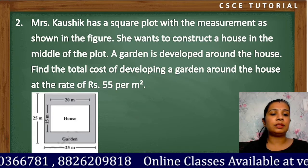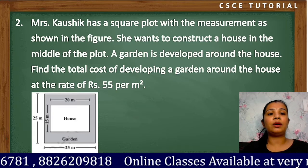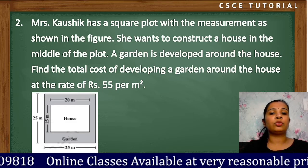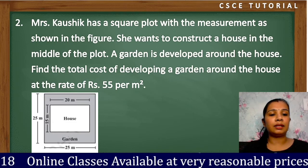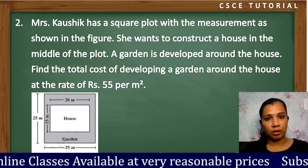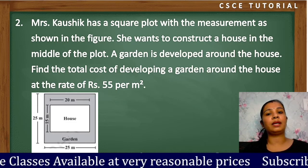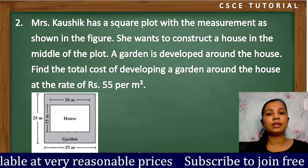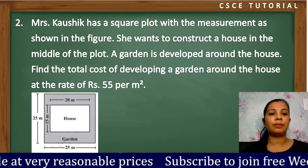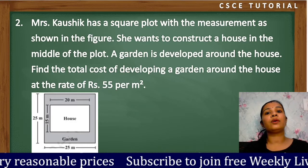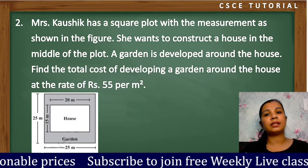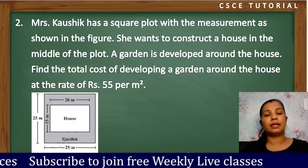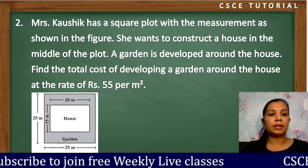You have to use the dimensions of the house as shown. The area of the house is in the middle of the plot. We will start with the area of the square plot, then find the area of the rectangular house, and subtract the two — so the remaining portion is the garden. Let's solve this.